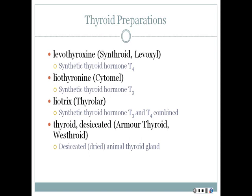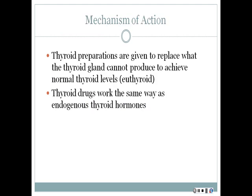Some of the thyroid preparations on the market include levothyroxine (Synthroid or Levoxyl), which is fairly common. Others include Cytomel, thyroid hormone, Thyrolar, and Armour Thyroid. These medications can be natural or synthetic in origin. Thyroid preparations are given to replace what the thyroid gland cannot produce, in order to achieve normal thyroid levels.